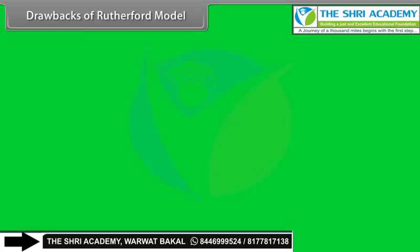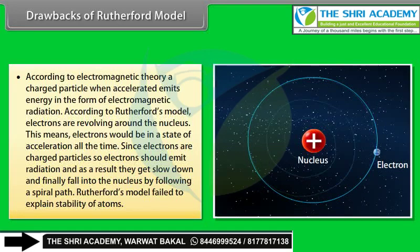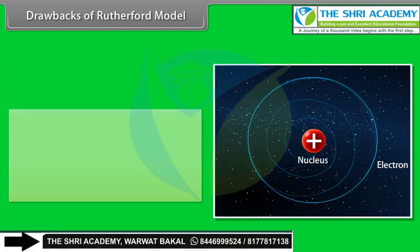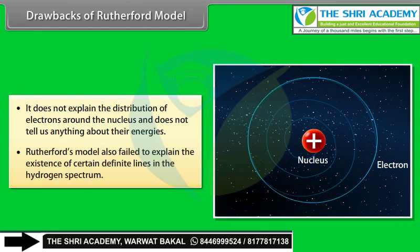Drawbacks of Rutherford's model: (1) According to electromagnetic theory, an accelerating charged particle emits energy. Revolving electrons should emit radiation, slow down, and spiral into the nucleus — the model failed to explain atomic stability. (2) It does not explain the distribution of electrons around the nucleus or their energies. (3) It also failed to explain the existence of certain definite lines in the hydrogen spectrum.